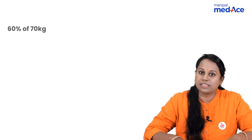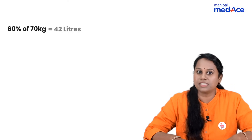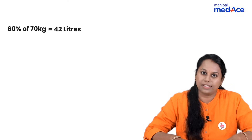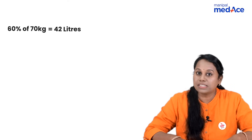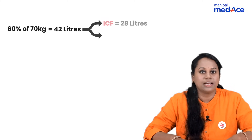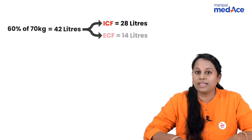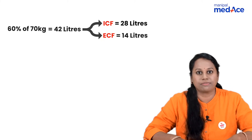In terms of numerical values, 60% of 70 kg is 42 liters. This 42 liters is divided as 28 liters ICF and 14 liters ECF.